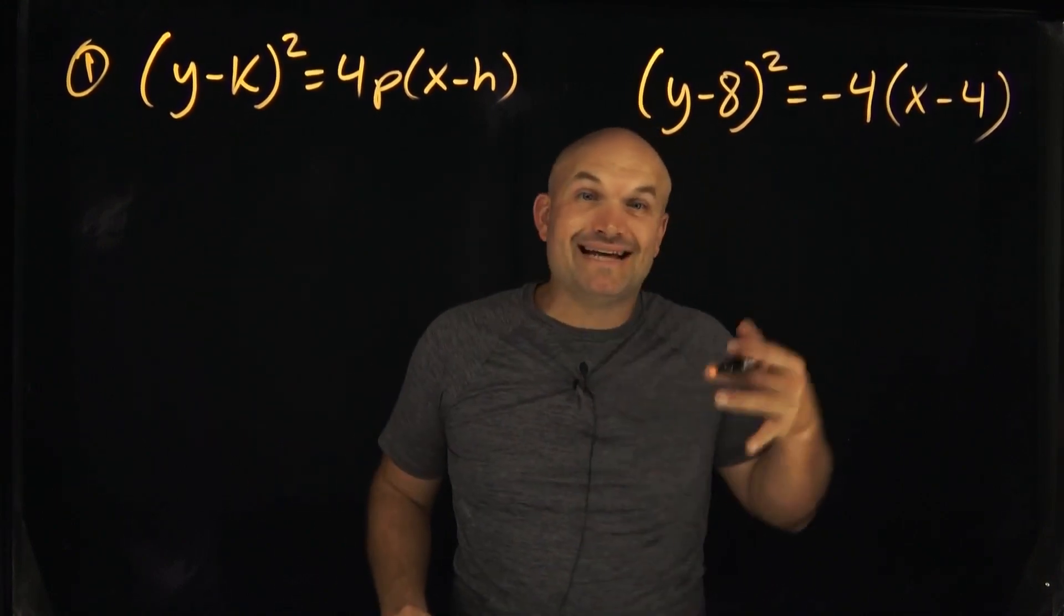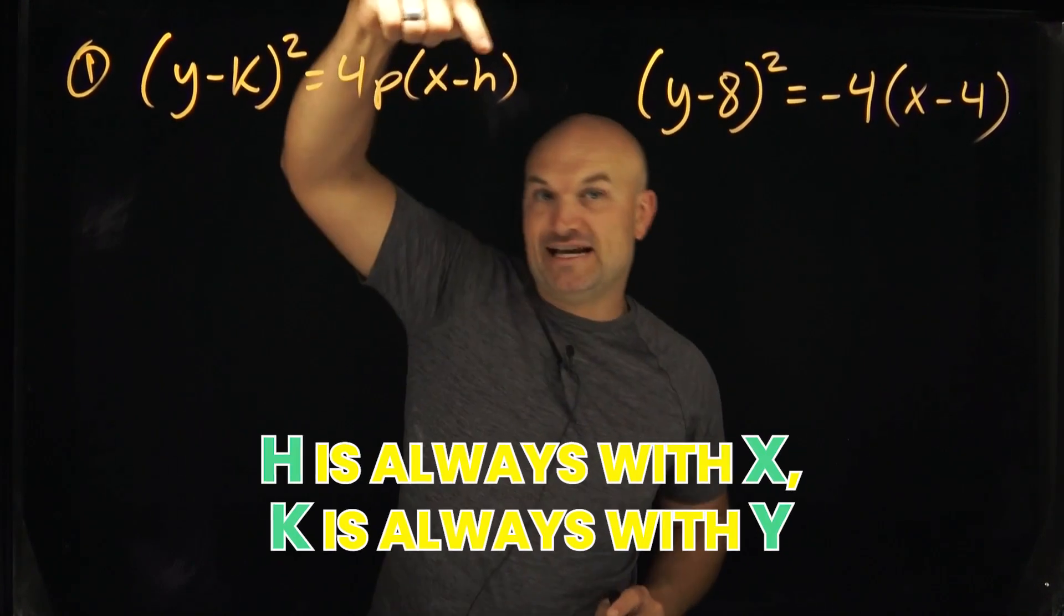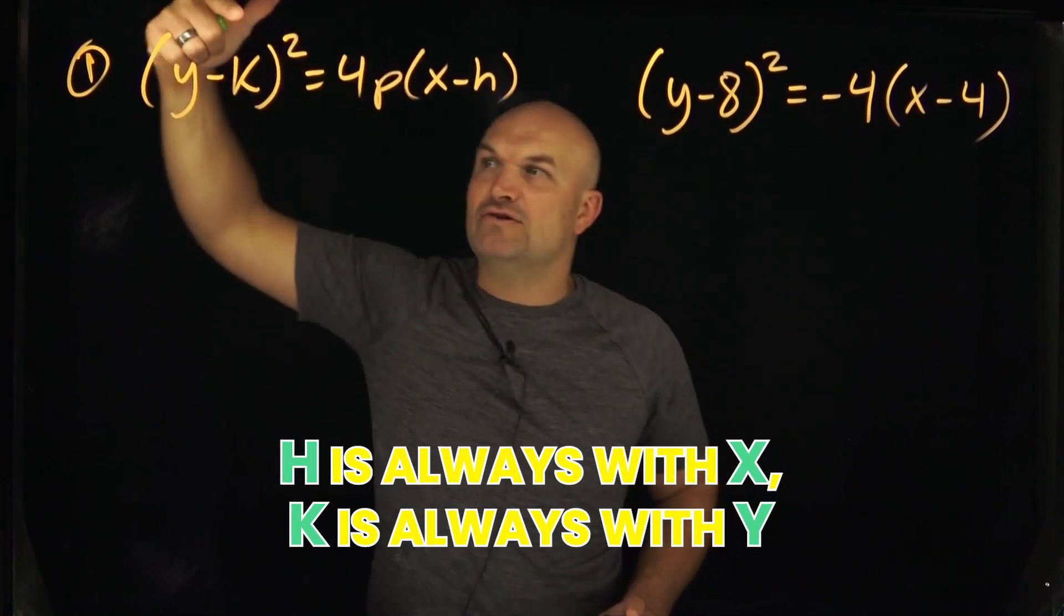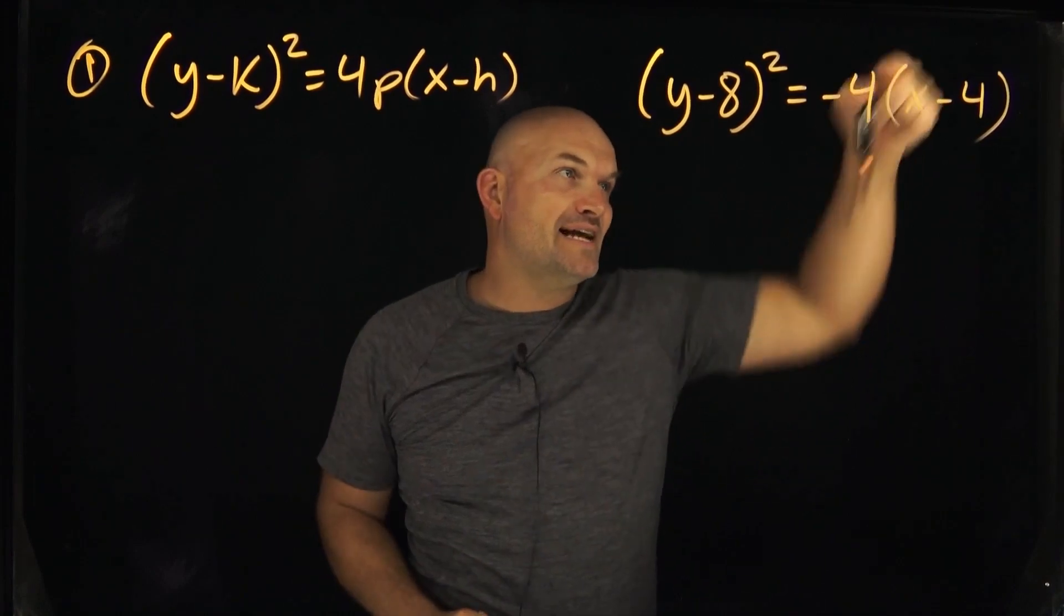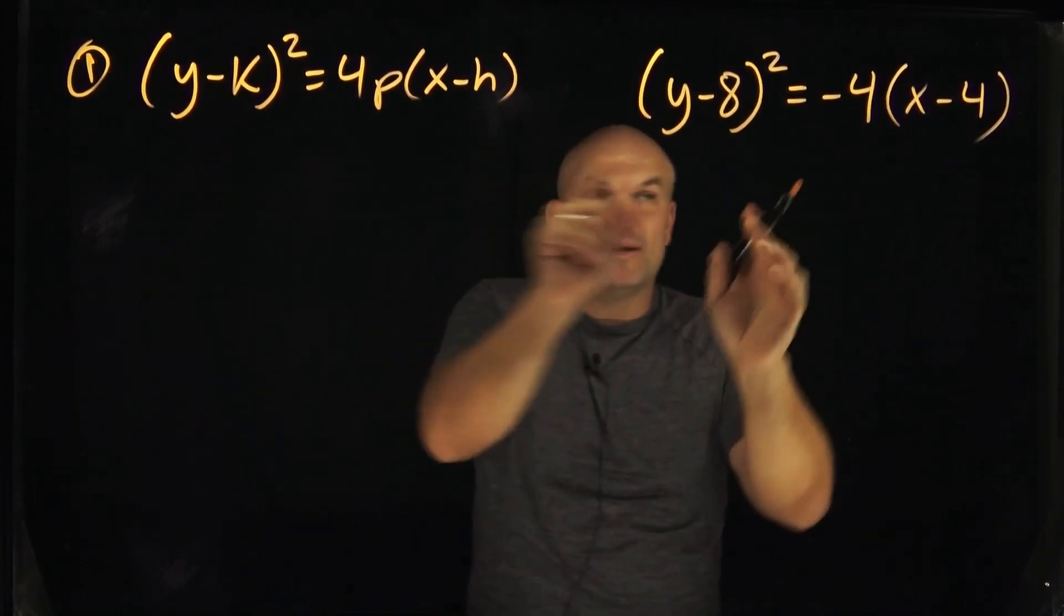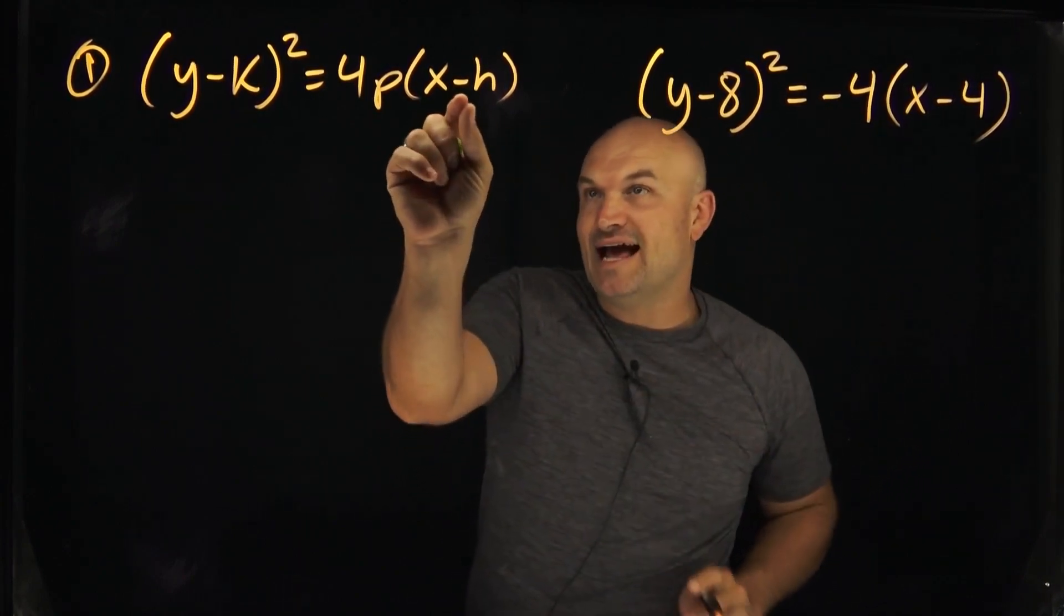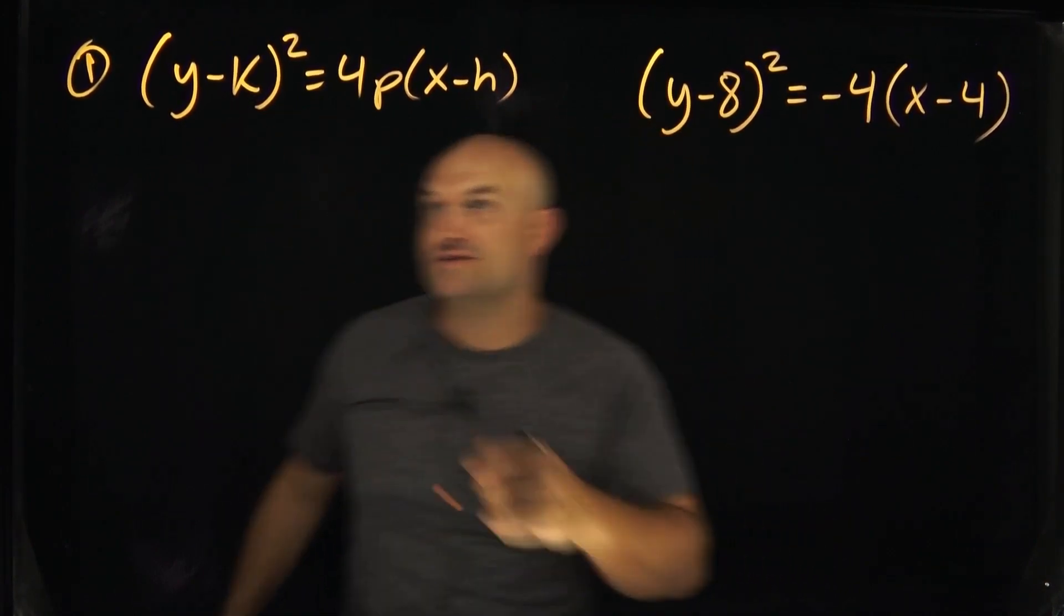Now the next step that we're going to want to do is identify the vertex. Now remember the vertex is going to be h, k. So h is always with x, k is always with y. h is always with x, k is always with y. I'll say it one more time so you don't forget it, h is always with x, k is always with y. So in this case you can see that my h here is going to be a 4 and my k is going to be an 8. Remember it's x opposite of h, x opposite of k. So that x, if you can kind of put parentheses around this h and the k, you recognize those are actually going to be your standalone values.